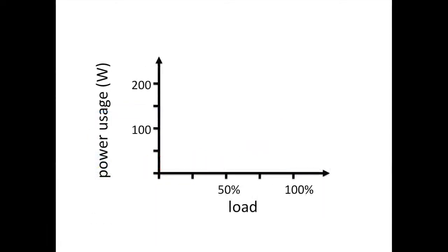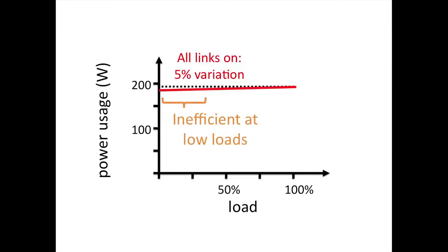Now we send packets through those links and plot the results. The x-axis is load, and the y-axis is measured power in watts. The red line shows power as a function of load. Going from idle to full throttle on all links results in only a 5% increase. This pattern, which holds for all the switches we tried, doesn't seem right. It means the switch is inefficient at low loads.